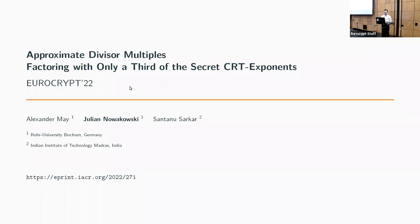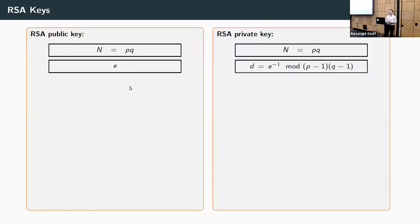This is 'Approximate Divisor Multiples: Factoring with Only a Third of the Secret CRT Exponents,' a new attack on RSA. Let's first recall the definition of RSA keys. An RSA public key contains a modulus N, which is the product of two primes p and q, and a public exponent e. The private key also contains N and the secret exponent d, defined as the multiplicative inverse of e modulo (p-1)(q-1).